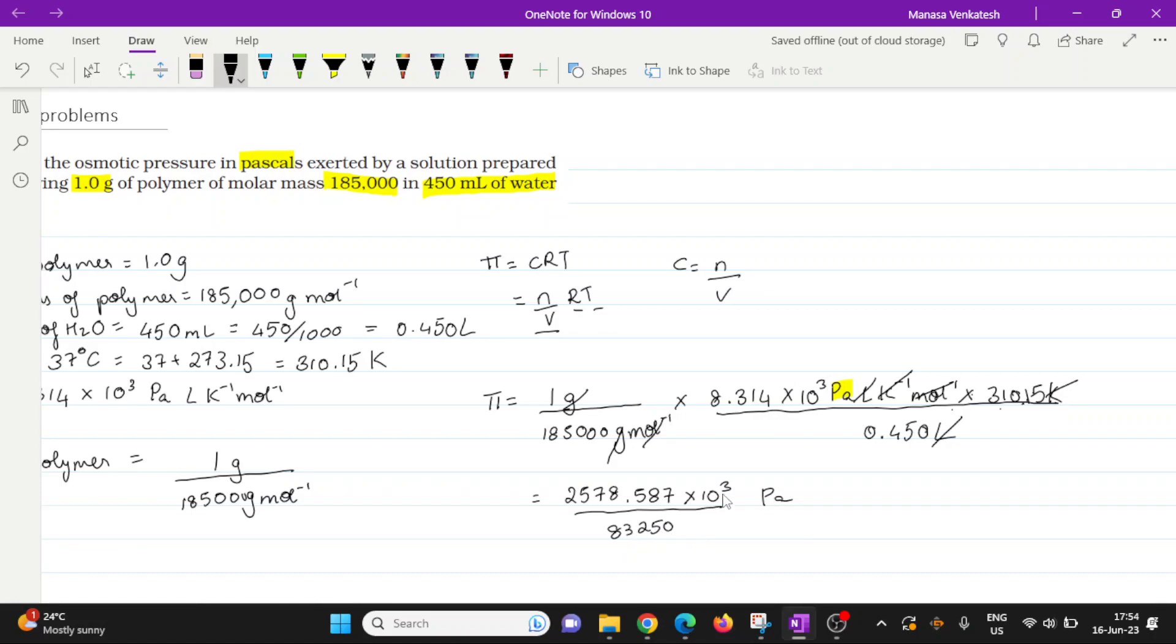Now this one, further simplification gives us 0.03097 times 10 to the power 3 pascal, which is 30.97 pascal.